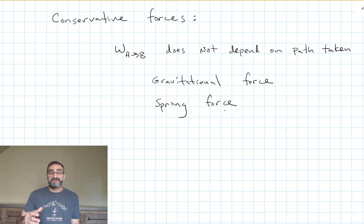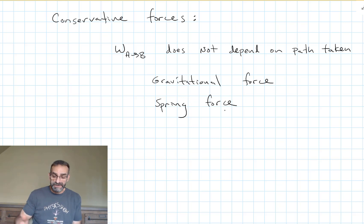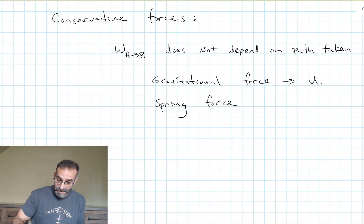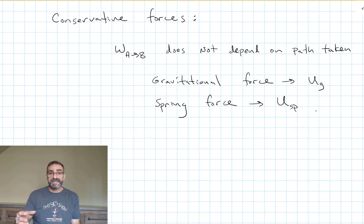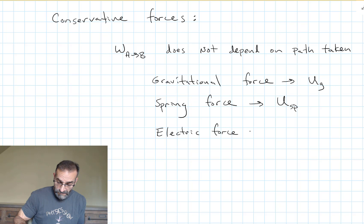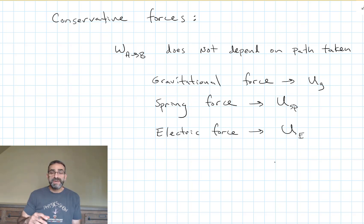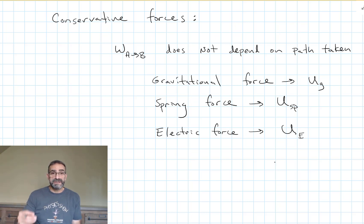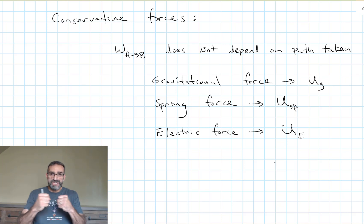Every time we had a conservative force — gravitational force and spring force — we came up with a potential energy term: spring potential energy and gravitational potential energy. Now we're getting our third conservative force: the electric force. So we can come up with a potential energy for our electric force and use it in energy equations the same way, with energy stored in our system because of electric charges interacting with each other.